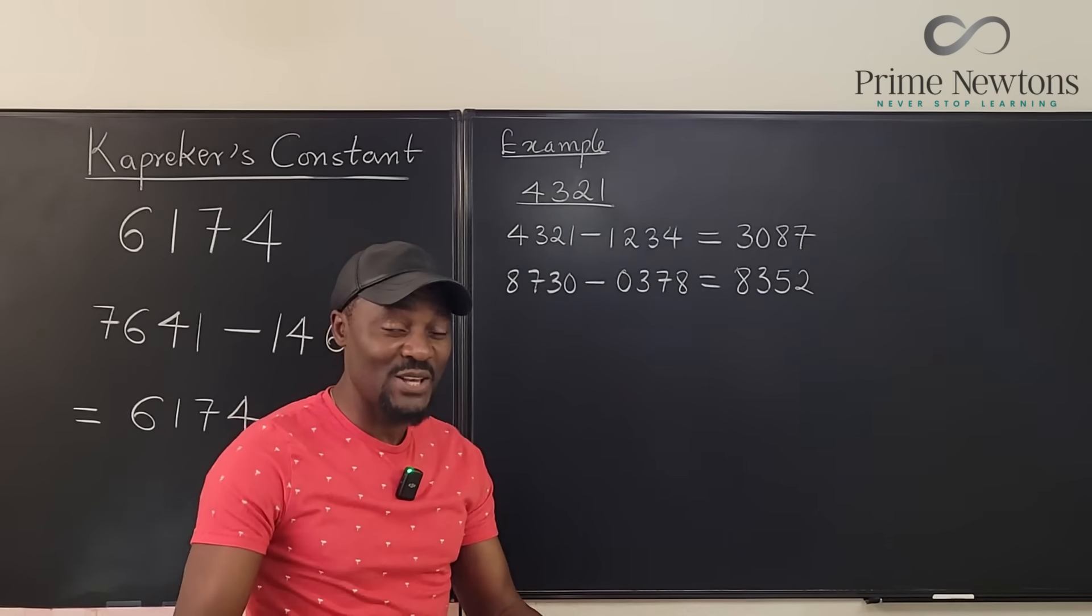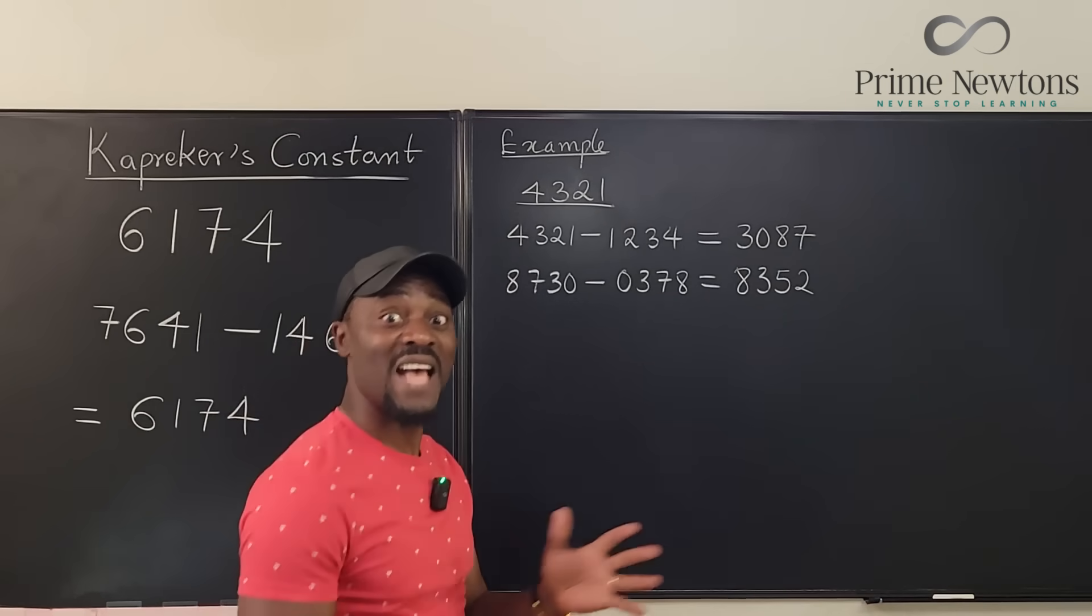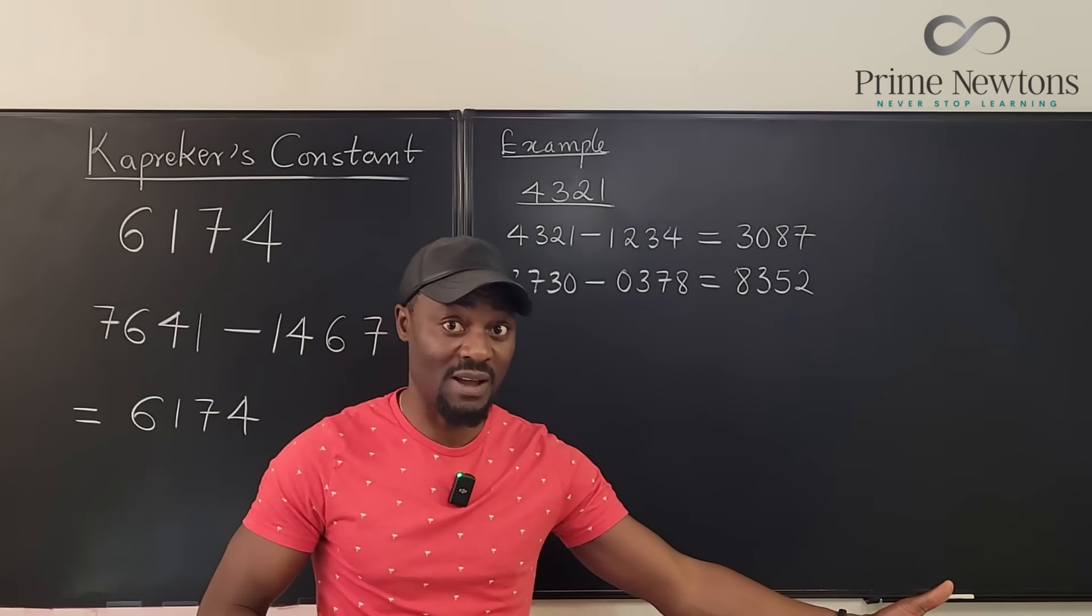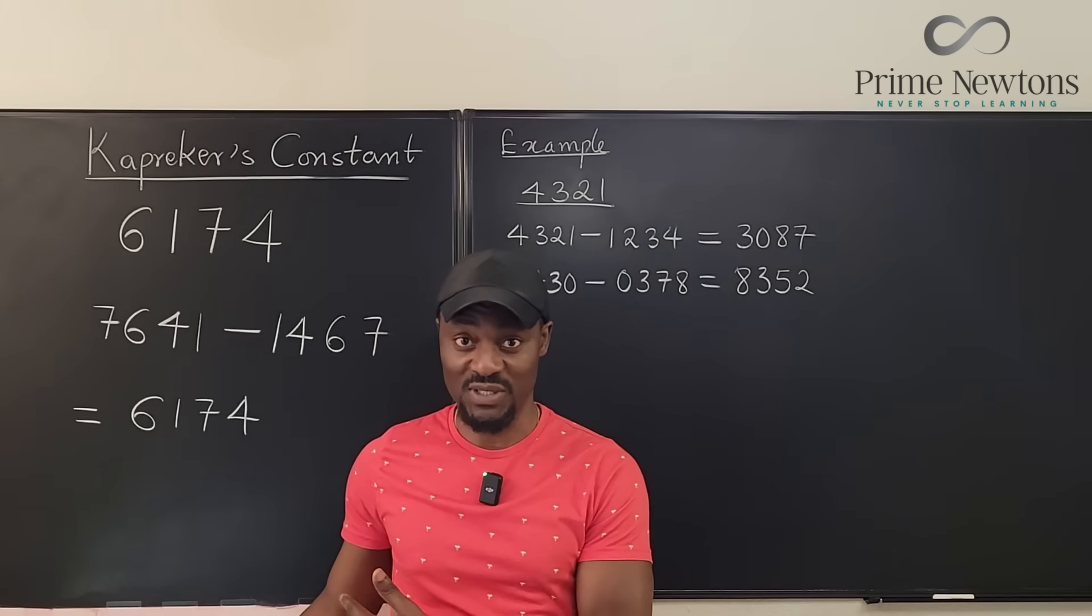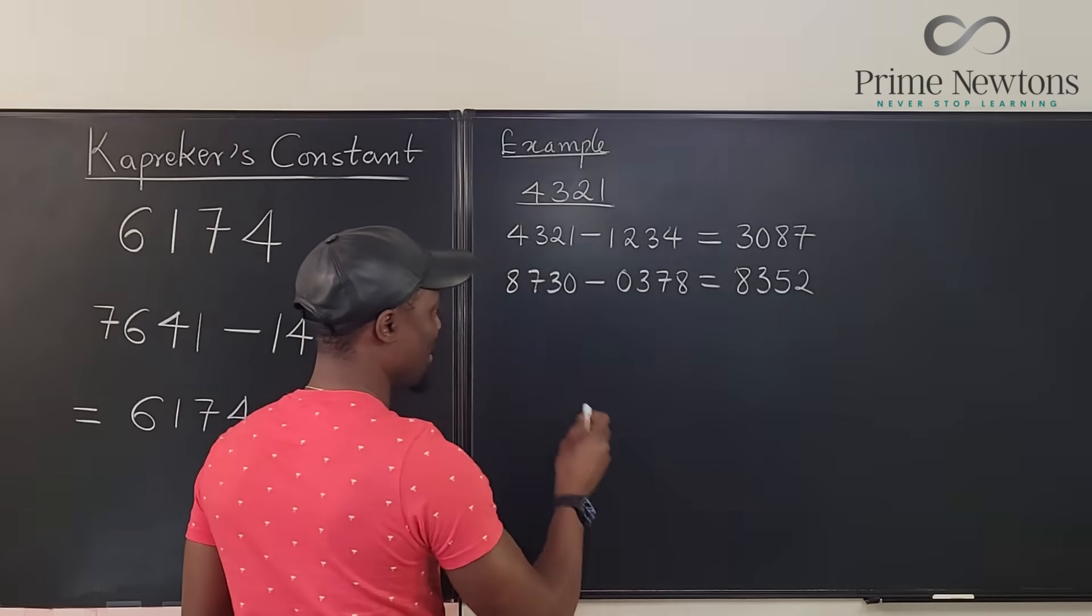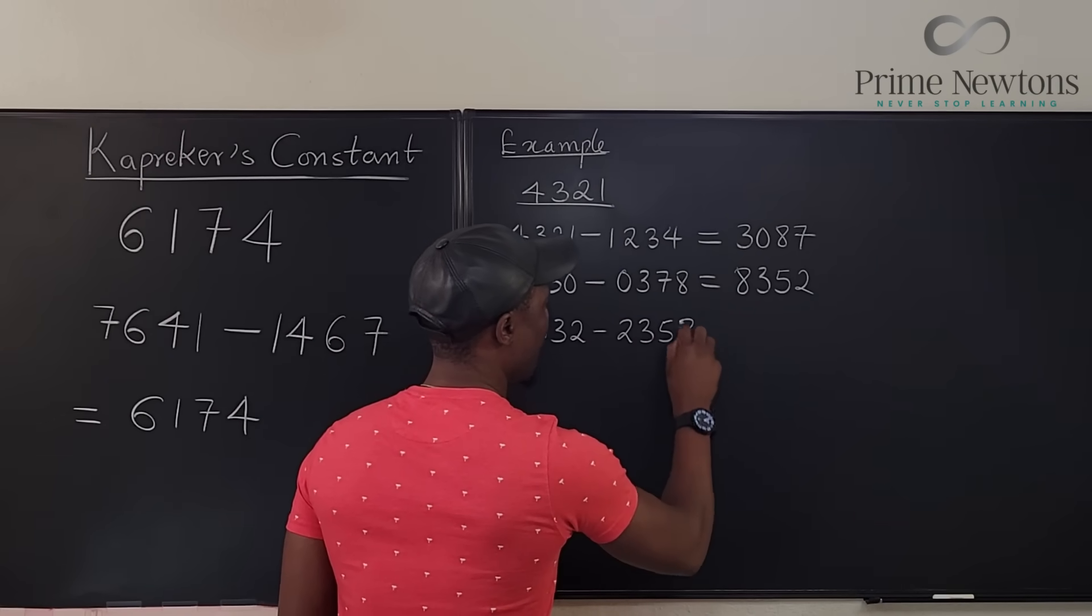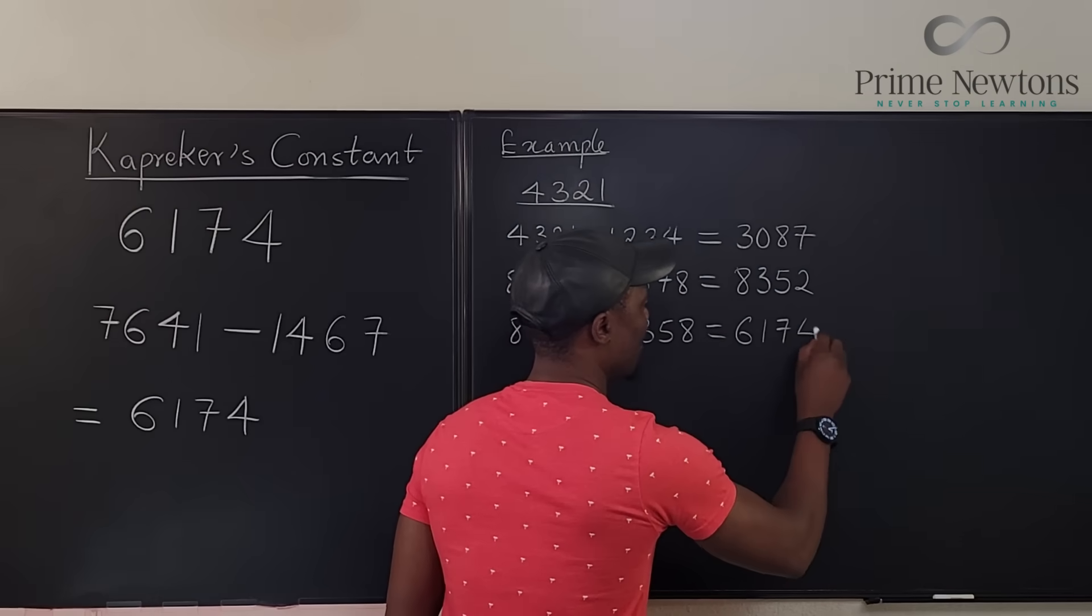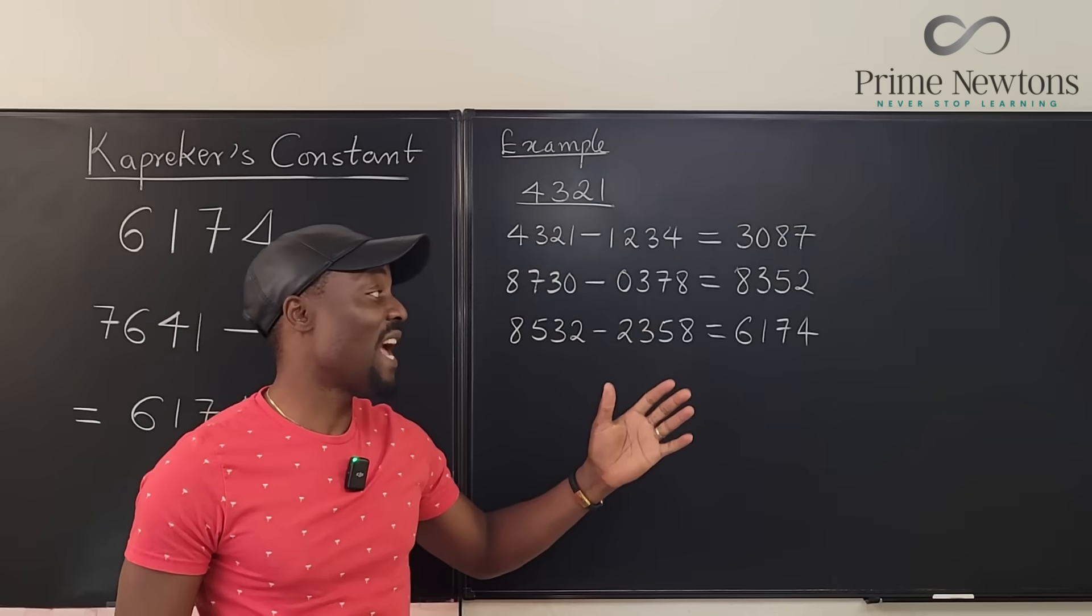So what makes this fun is you might randomly pick a number and start doing this and see which one gives you the fastest arrival at 6,174, or the longest time to get to 6,174. But whatever you do within seven steps, you will arrive at 6,174. That's why it's a special process. So if we do this, the biggest number here is going to be 8,532. And the smallest is 2,358. See, it's easy. You just reverse the order of the numbers. 6,174. I was thinking this was going to take long for it to arrive at 6,174, but I only had to do this three times.